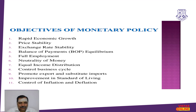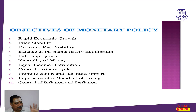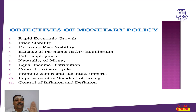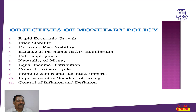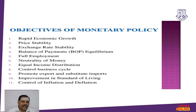Now let us move to the last part of the session — the objectives of Monetary Policy. We should understand why it is implemented. There are many objectives; for Section B answers, we have listed 10 to 11 points. Number one, to have rapid economic growth. That is the first objective. Number two, to maintain price stability in the economy. Number three, to maintain exchange rate stability, for which the instruments of Monetary Policy are very useful.